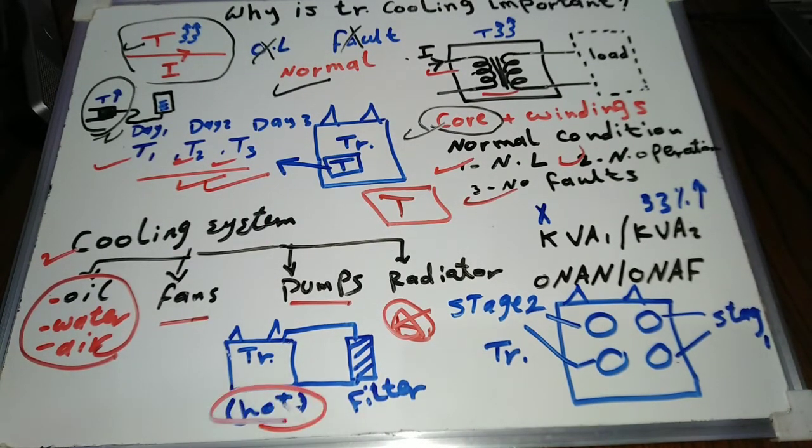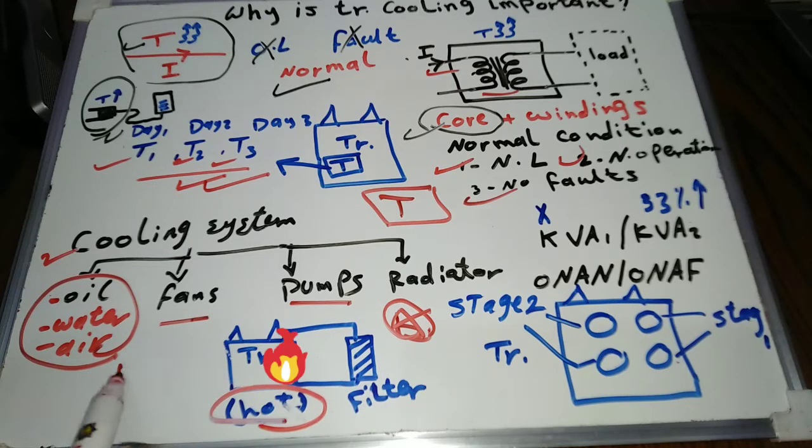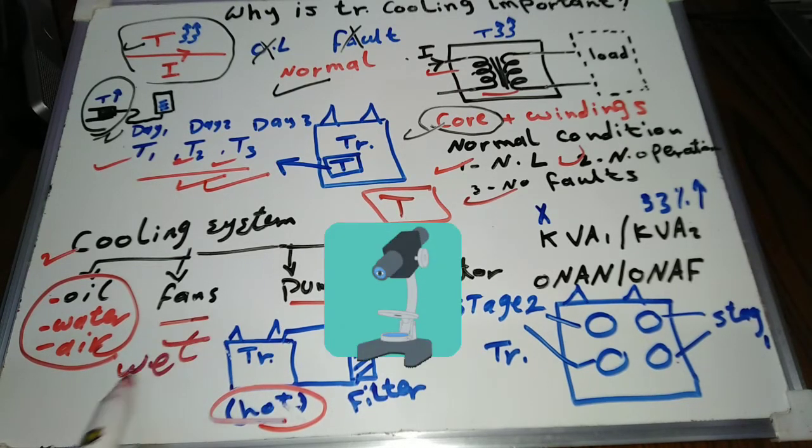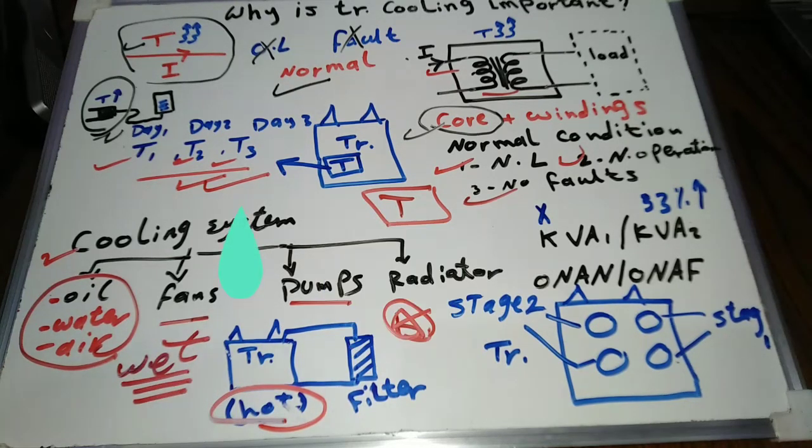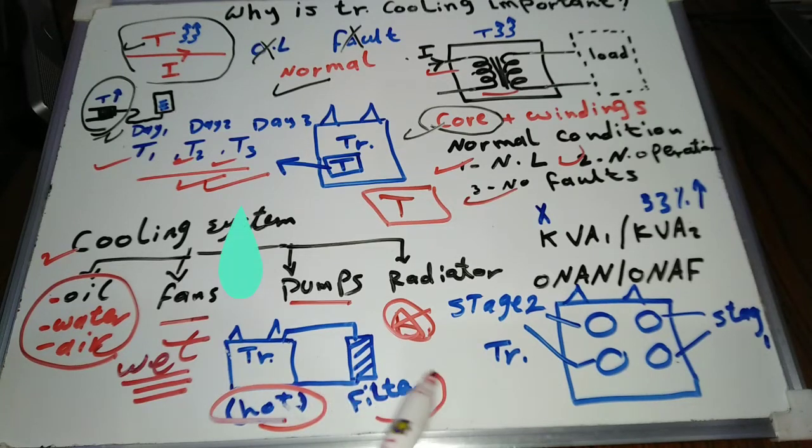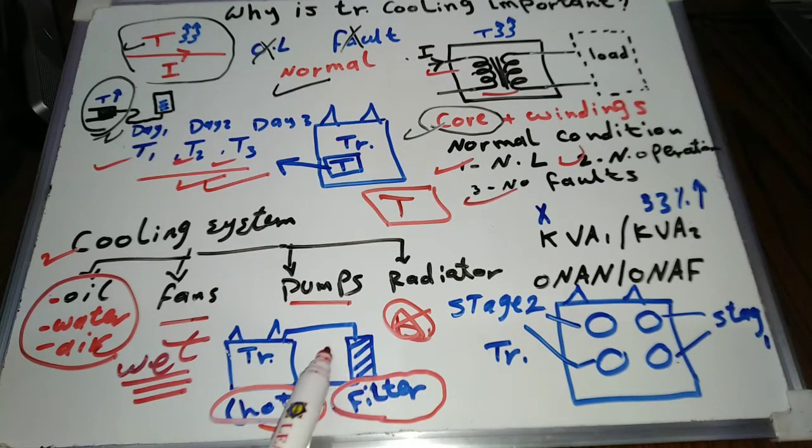Once we found a transformer temperature higher than normal. We made oil analysis to find out what is going on. The reason was that the oil was wet. It had moisture. We made oil filtration to clear this moisture from the oil.